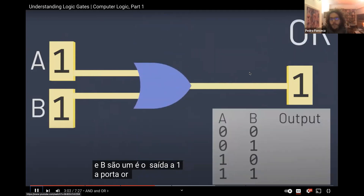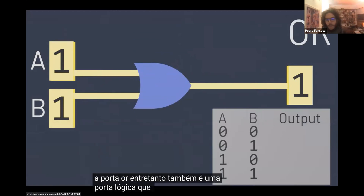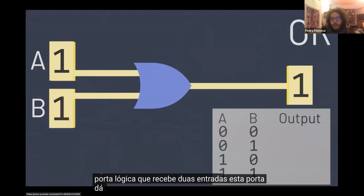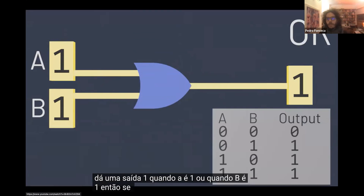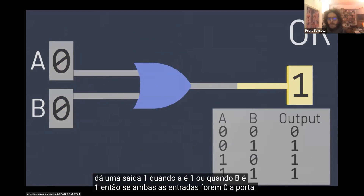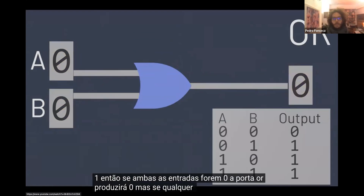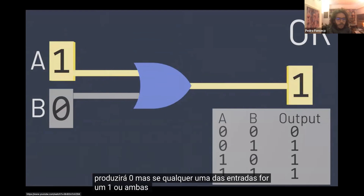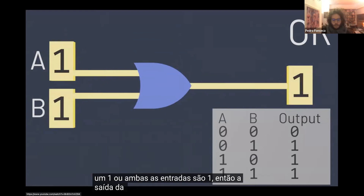The OR gate, meanwhile, is also a logic gate that takes two inputs. This gate outputs a 1 when A is a 1 or when B is a 1. So if both inputs are 0, the OR gate outputs 0, but if either of the inputs is a 1, or both inputs are a 1, then the output of the OR gate is also going to be a 1.